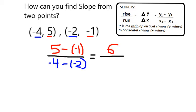5 minus negative 1 is like 5 plus 1, which is 6. Negative 4 minus negative 2 is like negative 4 plus 2, which is negative 2. So I get 6 over negative 2, which can be reduced to negative 3 over 1.